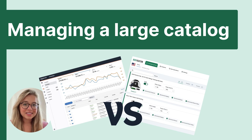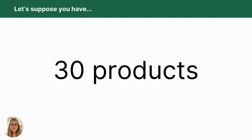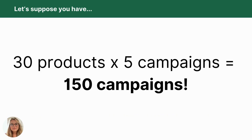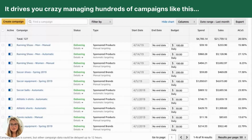Managing a catalog of dozens or hundreds of products using the Amazon Ads Console can be a nightmare. Let's suppose you have a catalog with 30 products. A good practice is to create at least one campaign per product. So, if you create two sponsored product campaigns, one display campaign, one brand, and one video campaign, you will have five campaigns per product — 150 campaigns in total in your Amazon Ads Console. It will drive you crazy managing hundreds of campaigns like this. It's so complicated that many sellers stop optimizing their campaigns after creating them.